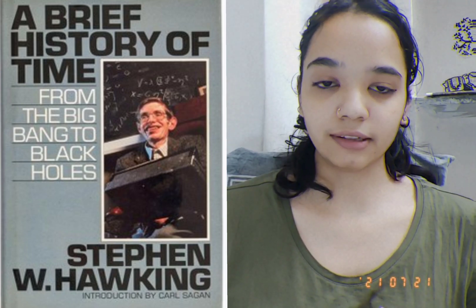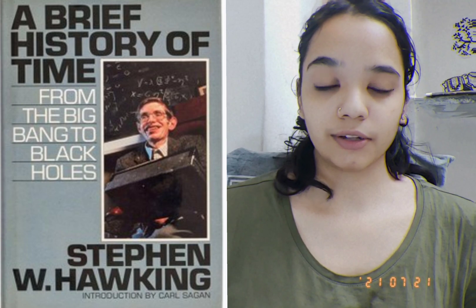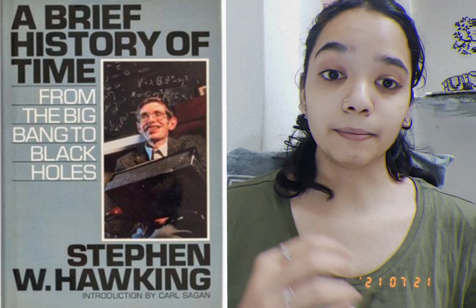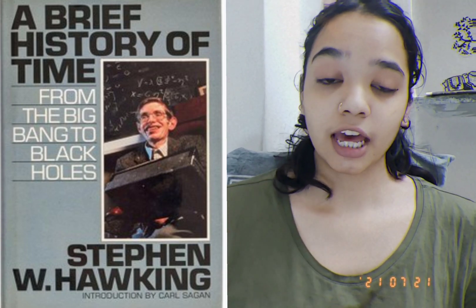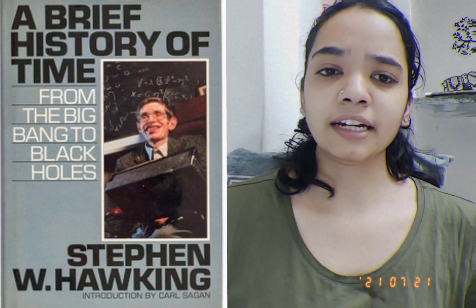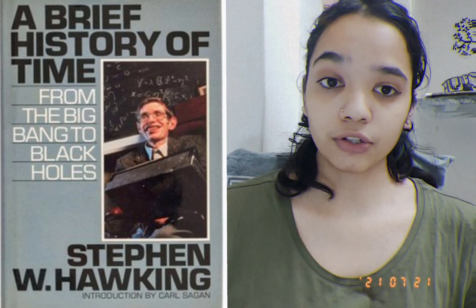Hey ladies and gentlemen, welcome back to our channel. Today I'm going to review a book which is 'A Brief History of Time: From Big Bang to Black Holes.' It is a book based on theoretical cosmology, written by Stephen Hawking. Stephen Hawking was a great scientist, author, cosmologist, and research director at the University of Cambridge.